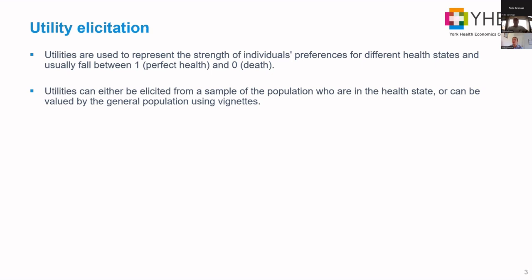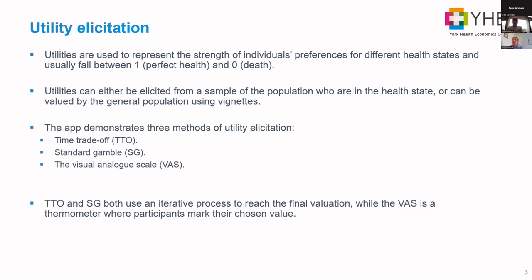To use utilities in an economic model, we first need to elicit them — find out what they are for each health state. This can be done in two ways: you can ask a sample of people with actual conditions, like asking people with lung cancer to rate their health from zero to one, or you can use the general population and ask them to imagine having a condition and rate it.